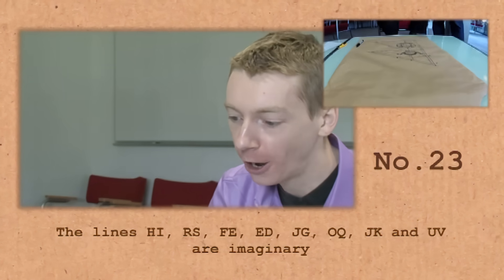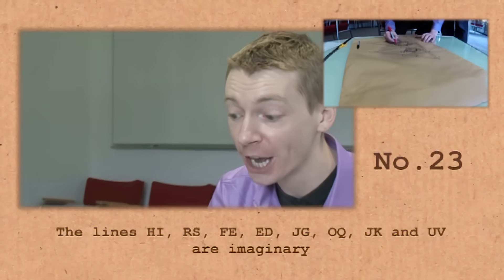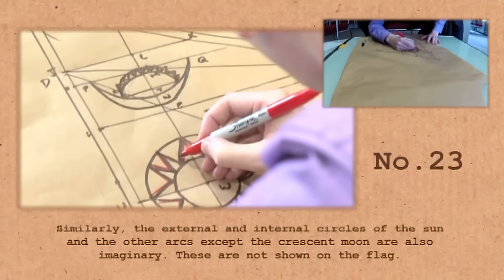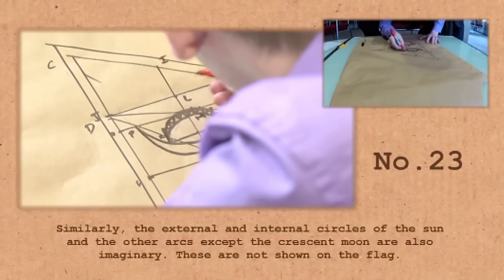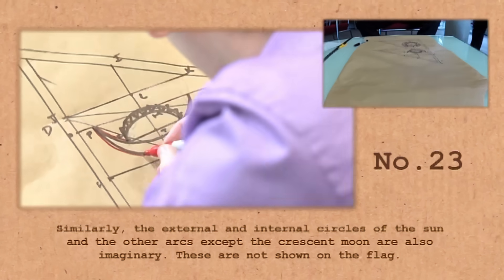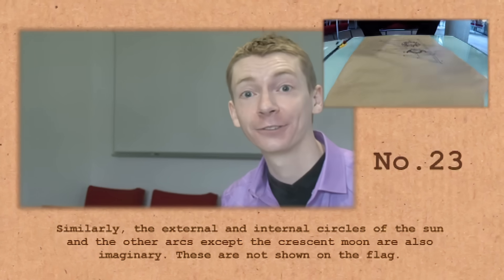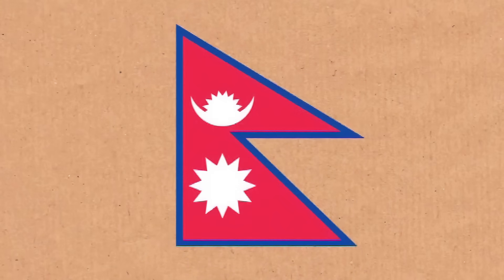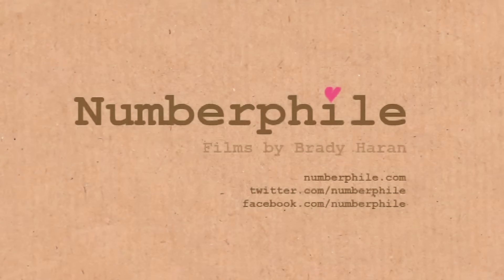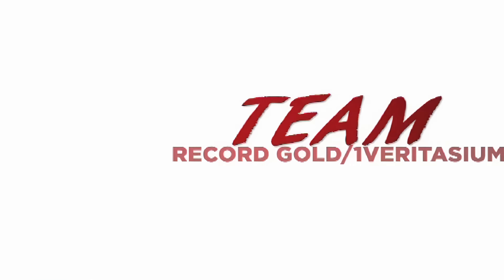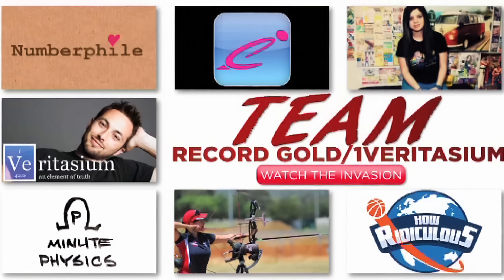The lines HI, RS, FE, ED, JG, OQ, JK and UV are imaginary. Similarly, the external and internal circles of the sun and the other arcs except the crescent moon are also imaginary. These are not shown on the flag. And it's as easy as it sounds.